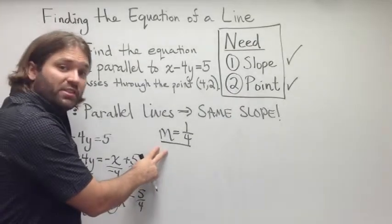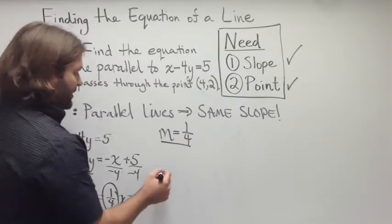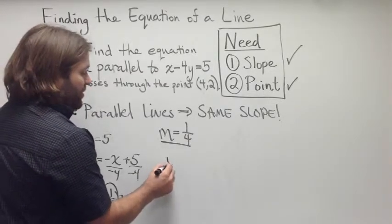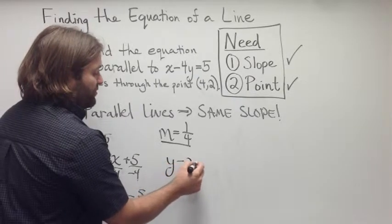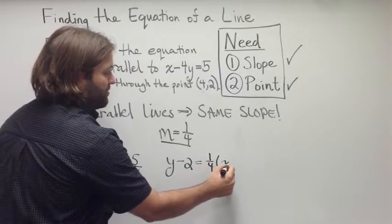Now that we know that the slope is 1 fourth, we can use the point slope form of the equation to find the equation of the line. That would be y minus 2 is equal to 1 fourth x minus 4.